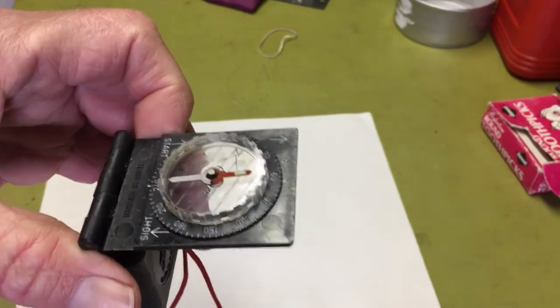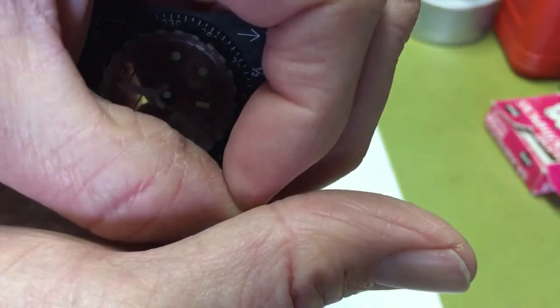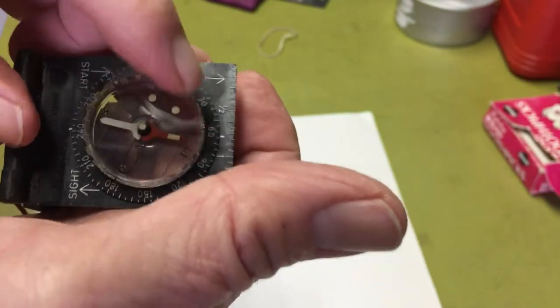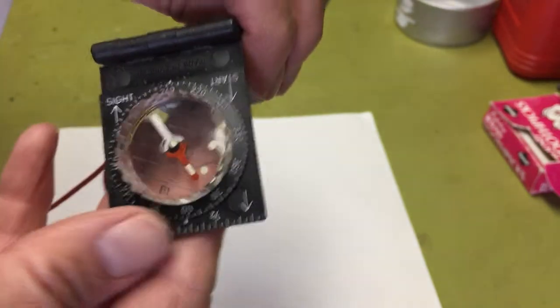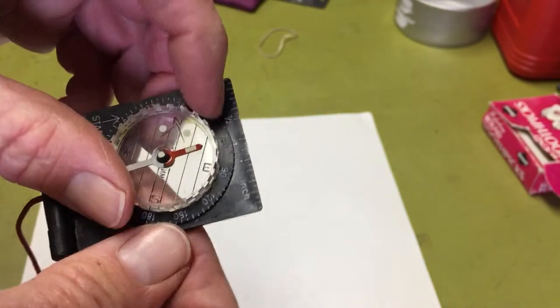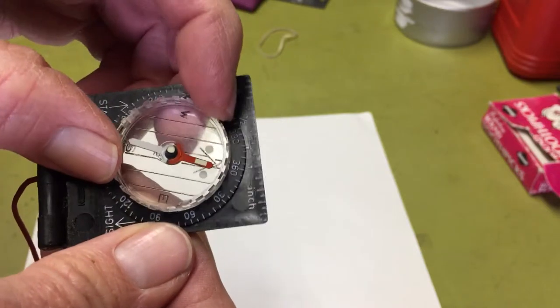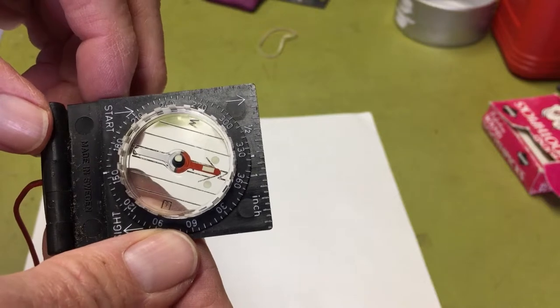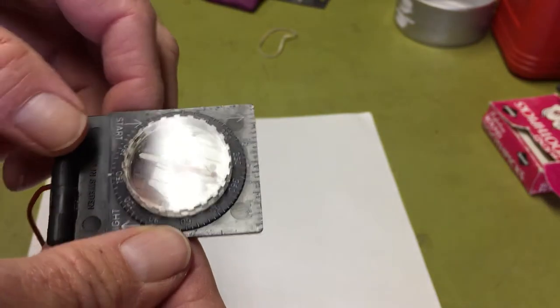It also has a luminescent dial, needle, north marker, and north on the needle, so you line those up. That's easier to see there. You can use it for night navigation, and if you have it open like this and just keep glancing down on it, you're less likely to get off course.